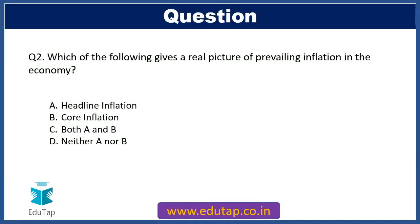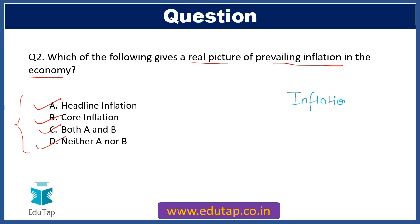Our second question: which of the following gives a real picture of prevailing inflation in the economy? Option A: headline inflation. Option B: core inflation. Option C: both A and B. Option D: neither A nor B. This question comes from the inflation topic of the finance syllabus — if your concepts are clear, this should not be very difficult. Do pause this video, apply your concepts, and then move on to cross-check your answer.